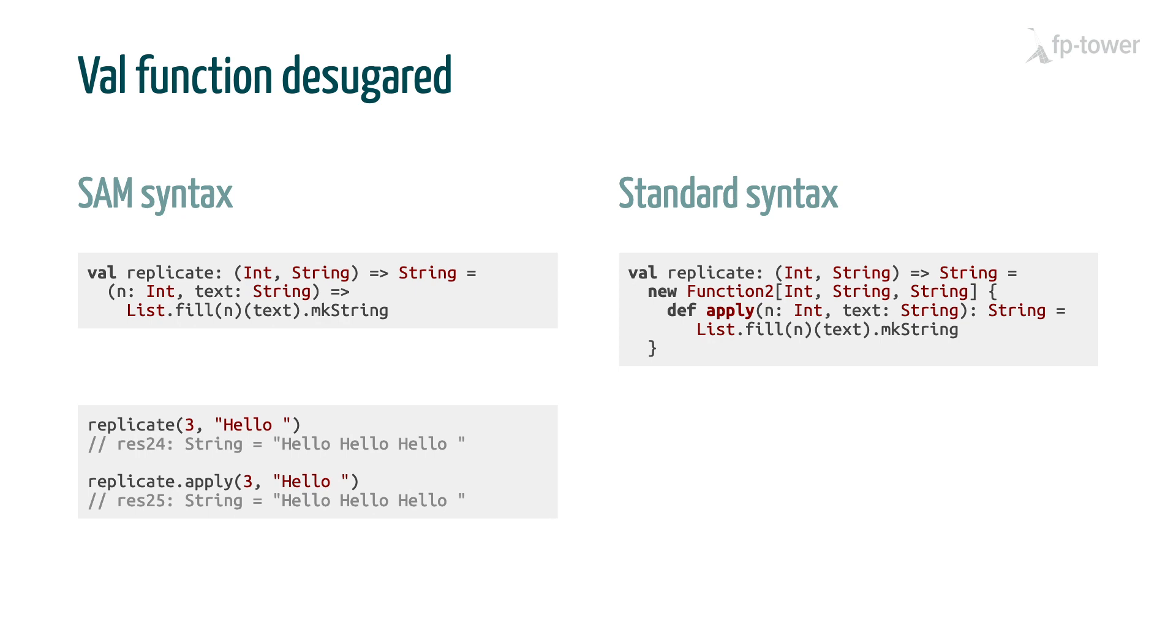Now, one mystery remains. Why can we call replicate without specifying apply? For example, we can say replicate 3 hello, and it's equivalent to replicate dot apply 3 hello. Again, the Scala compiler has some specific parsing logic for this. Whenever we have something dot apply, we can always remove the dot apply part.